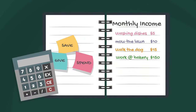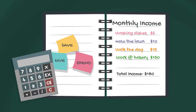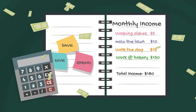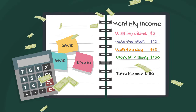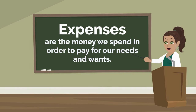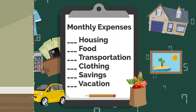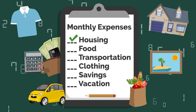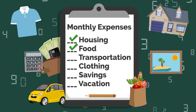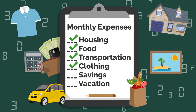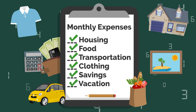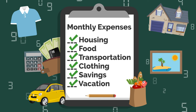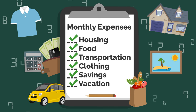Once we've calculated our total income, we need to decide how we'd like our money to be spent. When we spend money to pay for our needs and wants, it's called expenses. Some examples of expenses are things like housing, food, transportation, clothing, and even our savings. Expenses can also be very different from person to person.